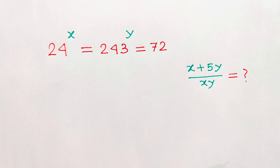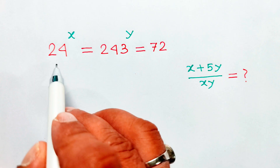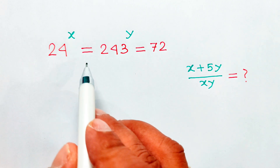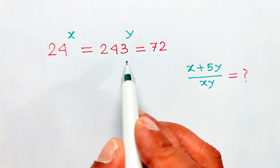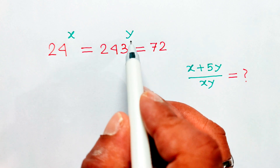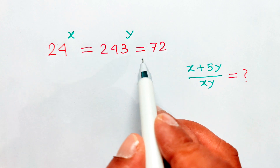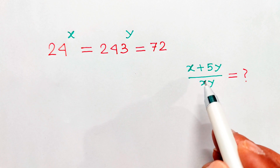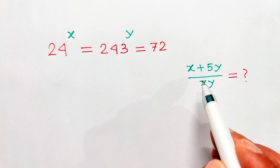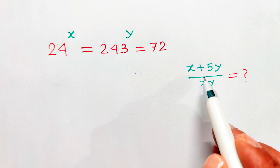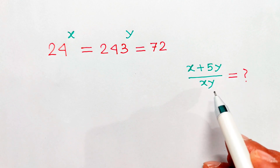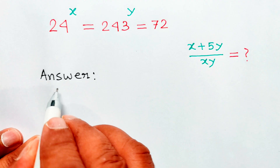Hello everyone. In this video we have been given 24 to the power x equal 243 to the power y equal 72. Now we are going to find the value of x plus 5y divided by xy.